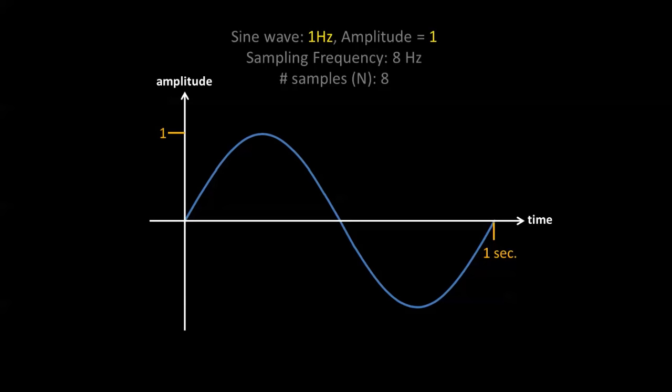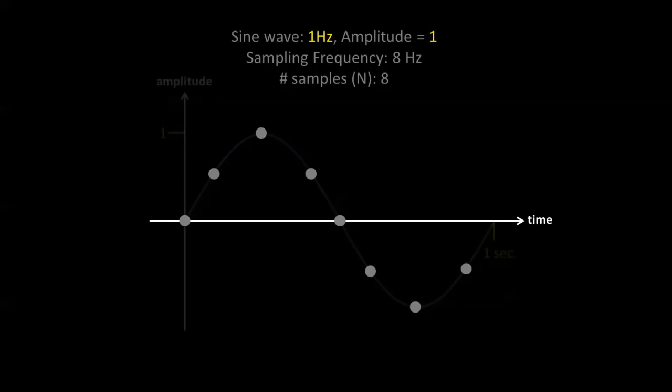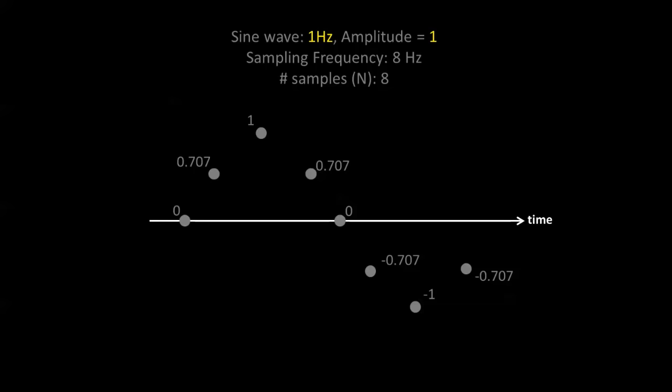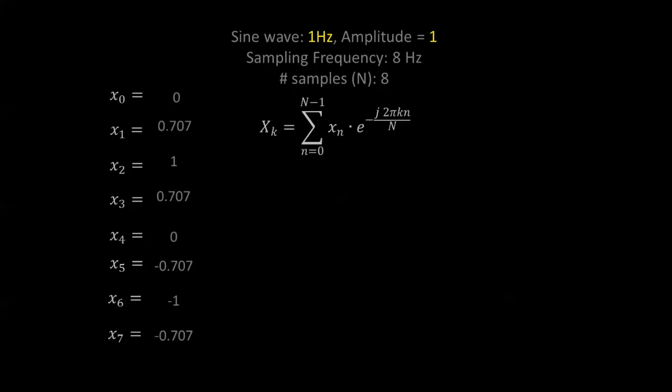Let's look at a simple sinusoid: a 1 Hz sine wave at amplitude equals 1. Because the Fourier transform decomposes a signal into sinusoids, we expect to see an amplitude value of 1 at the 1 Hz frequency bin. The sampling frequency for this example is 8 Hz, and we'll use 8 samples. Those samples are taken across the sine wave, and once we have their values, we have enough information to begin the discrete Fourier transform.